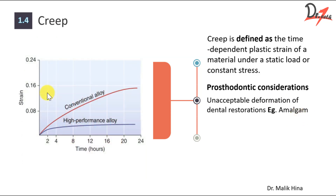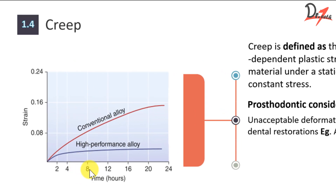Now the importance of creep can be interpreted by this graph. Here we can see that we have the creep curves for two kinds of amalgam: the conventional alloy, that is the low copper amalgam, and the high performance alloy, that is the high copper amalgam. Now at any point of time, you can see that for low copper amalgam it has a higher strain. For example, at eight hours it has more strain, while high copper has this much strain. At 16 hours, low copper has this much strain but the high copper has less strain. Thus, we have a greater creep value in the low copper amalgam. That is why low copper amalgam is more susceptible to creep.